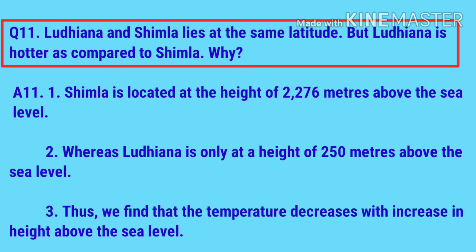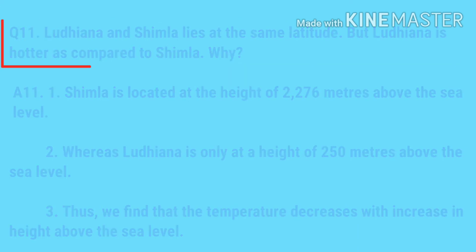Last question: Ludhiana and Shimla lie at the same latitude, but Ludhiana is hotter than Shimla — why? Shimla is located at a height of 2,276 meters above sea level whereas Ludhiana is only at a height of 250 meters above sea level. Thus, temperature decreases with increase in height above sea level.